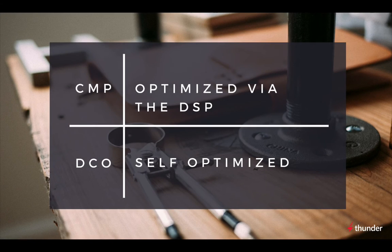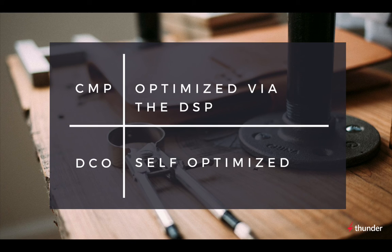With CMPs, separate pre-built ads leverage decisioning and other technologies like DSPs, DMPs, and ad servers for their optimization. Individual variations are tailored to specific audiences and set up in groups for testing. A CMP makes better use of your ad tech stack investment and keeps your media and creative optimization in the same place. Dynamic creative ad units, on the other hand, are self-optimized — they require logic to be built into the unit, giving the creative itself control over what to show in each impression.